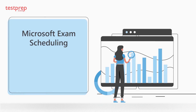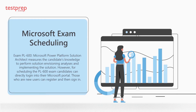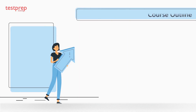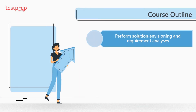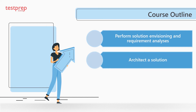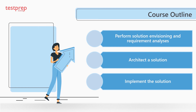The Microsoft Power Platform Solution Architect exam measures candidates' knowledge to perform solution envisioning, analysis, and implementation. For scheduling the PL-600 exam, candidates can directly log in to their Microsoft portal; new users can register and then sign in. The course outline covers: one, perform solution envisioning and requirement analysis; two, architect a solution; three, implement the solution.